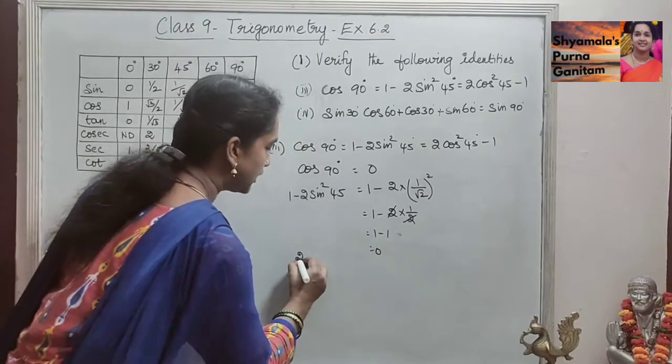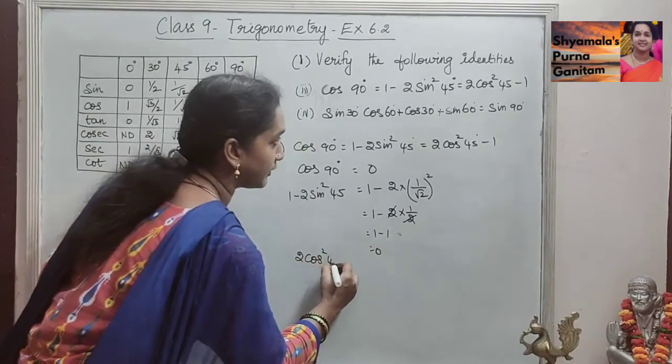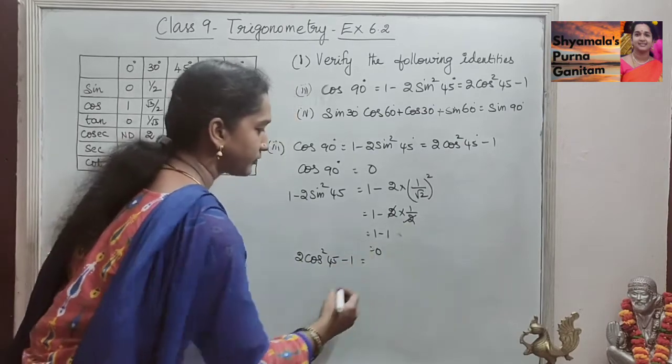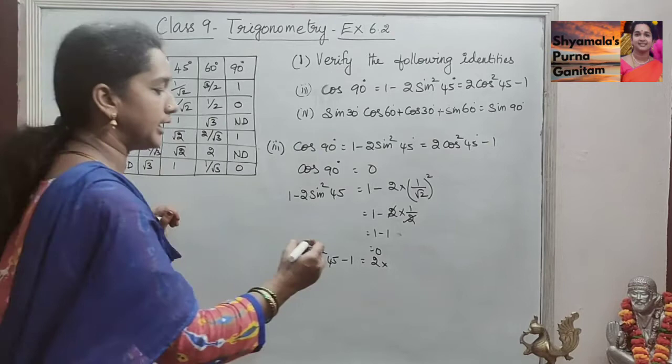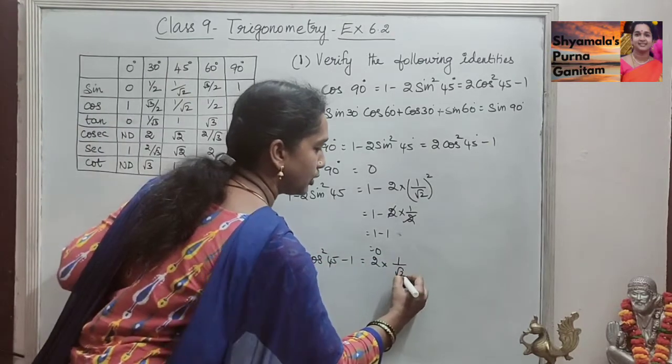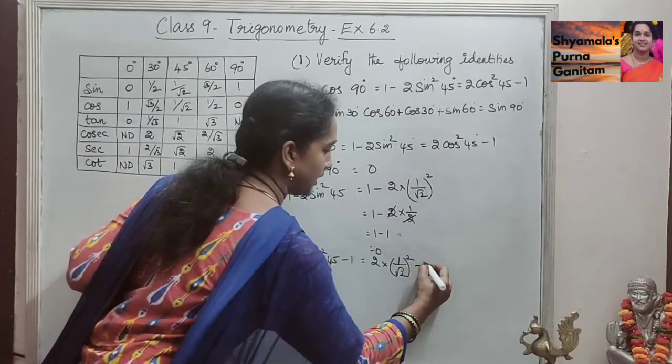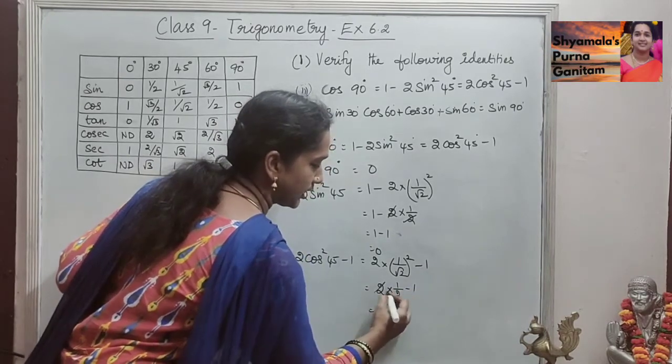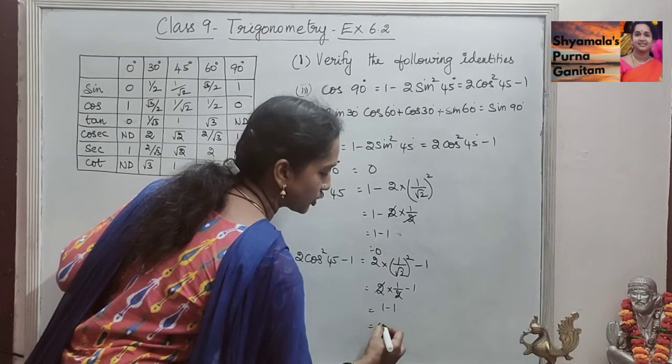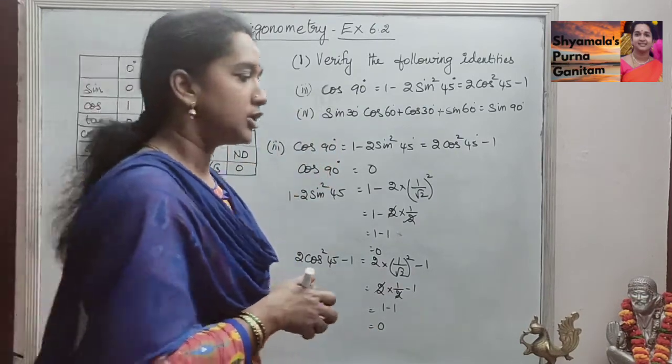Then the third one is 2 cos squared 45° minus 1. So, 2 into cos 45° value is 1 by root 2, 1 by root 2, the whole square minus 1, so that is 2 into 1 by 2 minus 1, so that is 1 minus 1, that is also equal to 0.